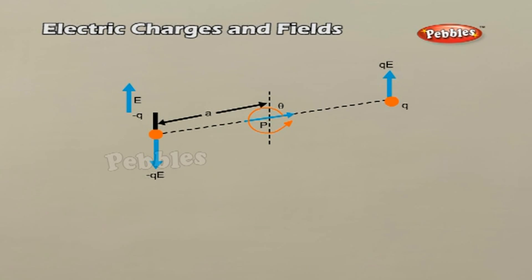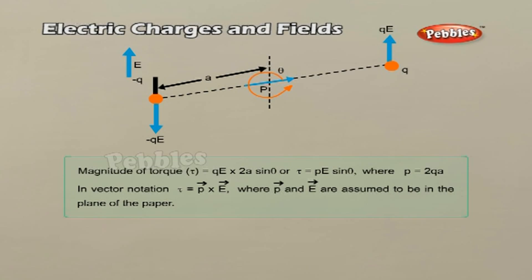An electric field is said to be uniform if its strength is the same at every point. Consider a permanent dipole of dipole moment P in a uniform external field E. The force on +Q is QE and on -Q is -QE, so the net force on the dipole is zero. However, since the forces act on different points, they give rise to a torque on the dipole. When net force is zero, the torque is independent of the origin. Its magnitude equals the magnitude of each force multiplied by the perpendicular distance between the two anti-parallel forces. Thus, an electric dipole placed in a uniform electric field experiences a torque that aligns the dipole parallel to the direction of the electric field.